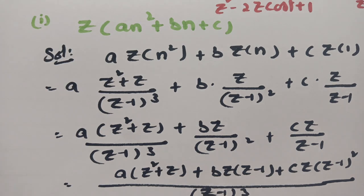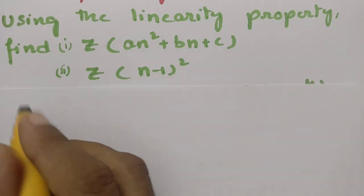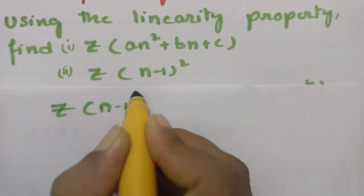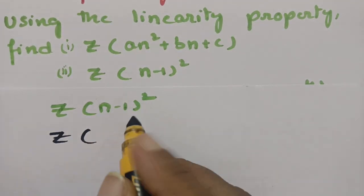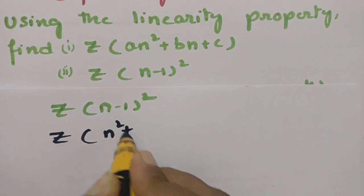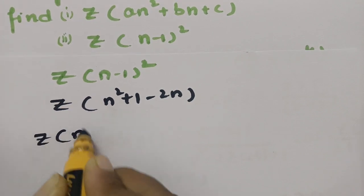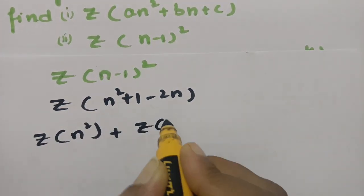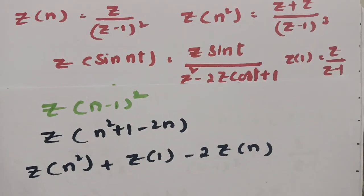The second equation is the Z transform of (n−1)². We expand (n−1)² using (A−B)² = A² + B² − 2AB, which gives Z{n²} + Z{1} − 2·Z{n}. Using the linearity property we apply each formula separately. All the required formulas are ready.